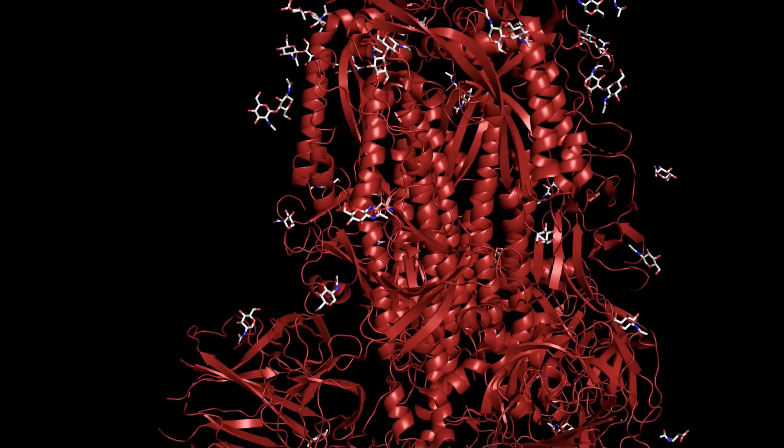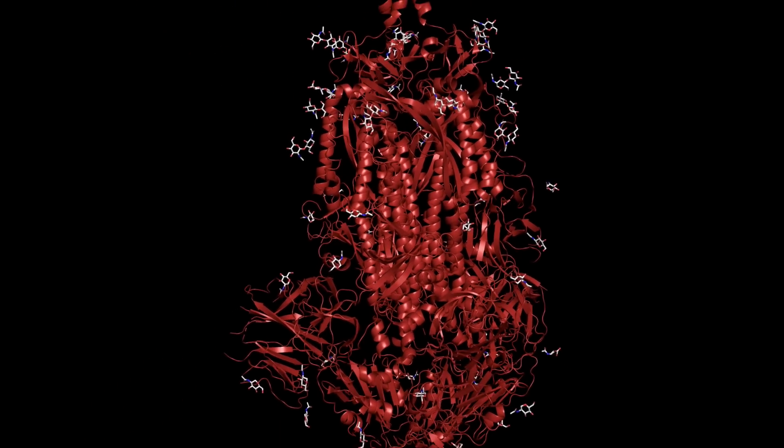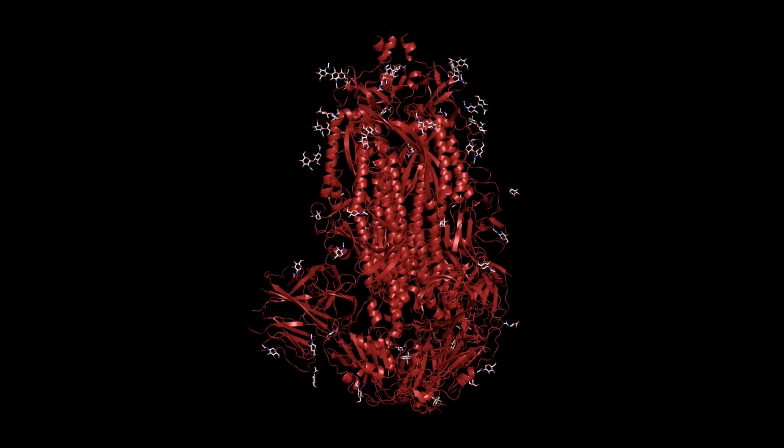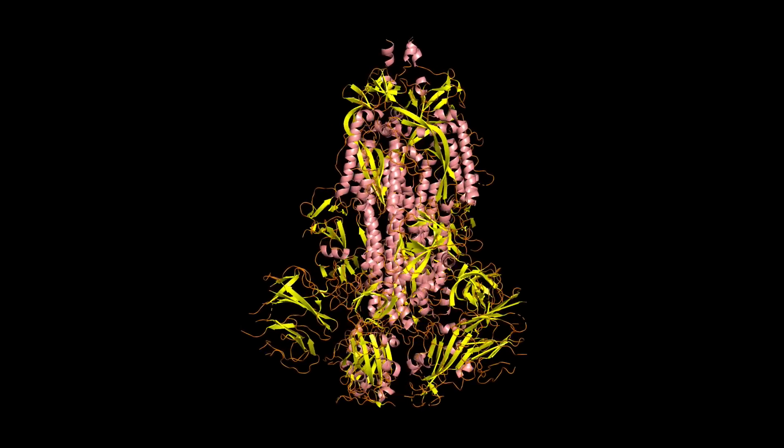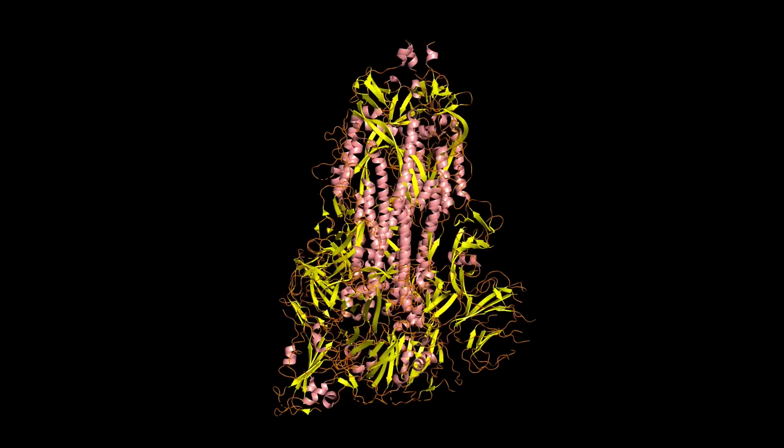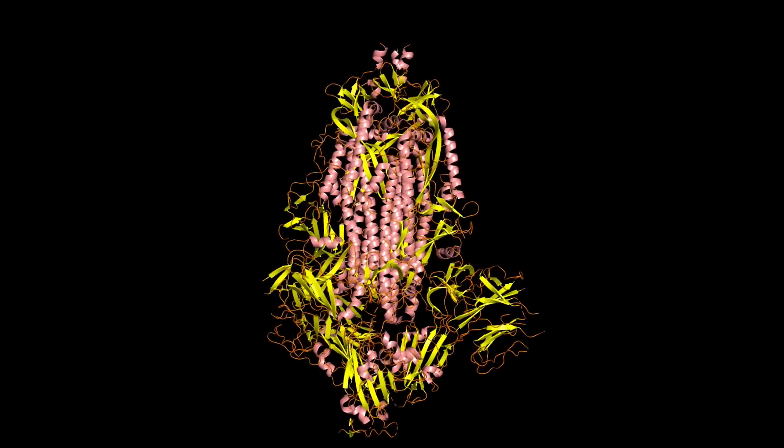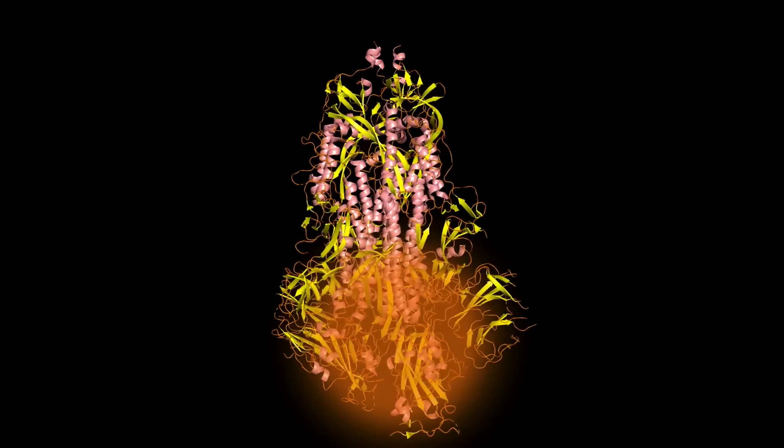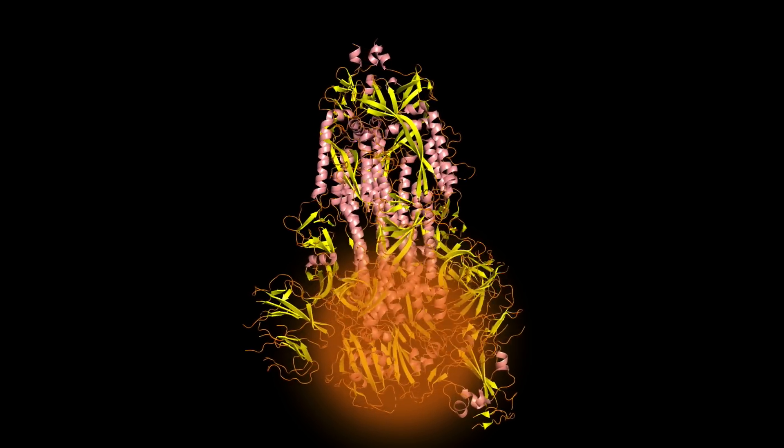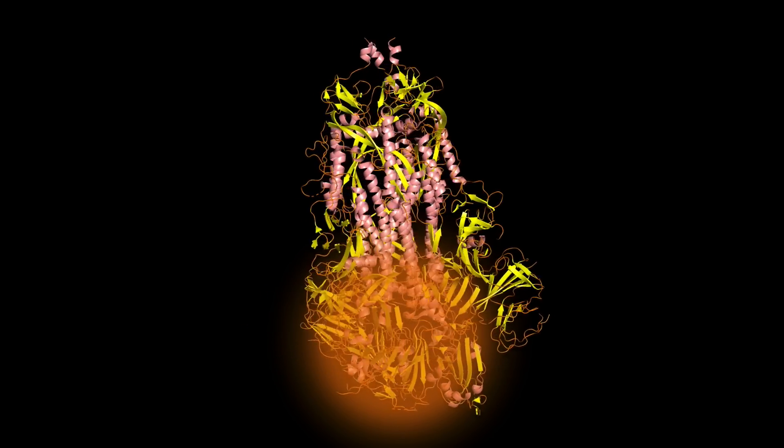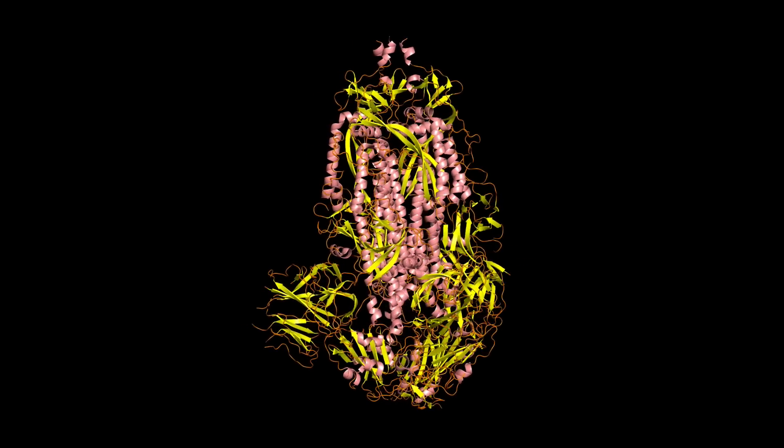As we zoom back out, we're now looking at the ribbon diagram of the protein. And if we color the alpha helices pink and the beta sheets yellow, we see a section of alpha helices running the length of the spike protein. For the most part, the beta sheets are concentrated on this end, which is where the spike protein fuses with a cell to infect it.